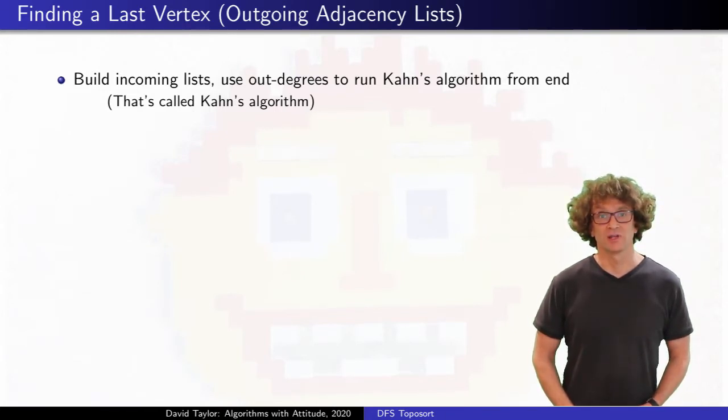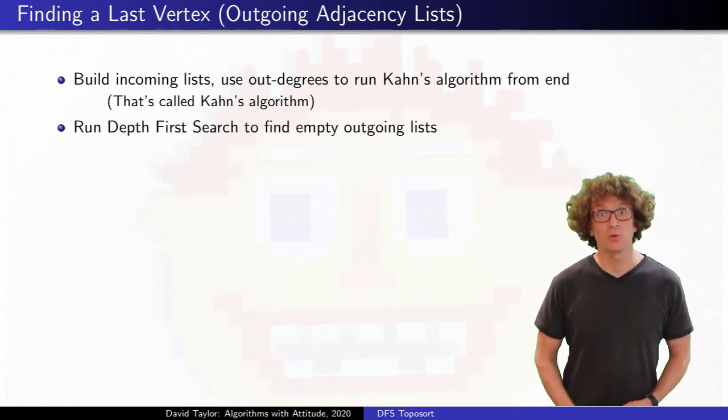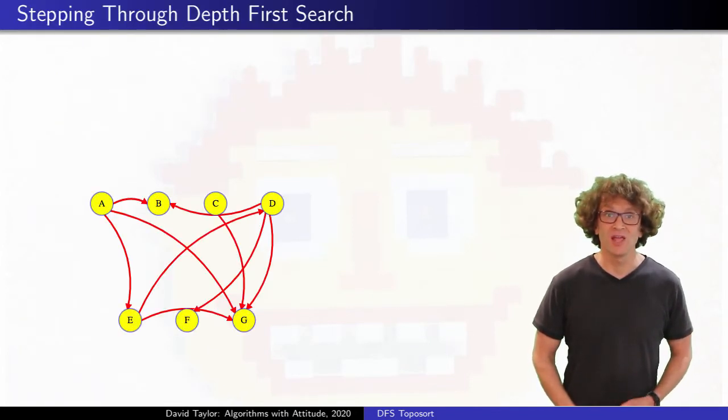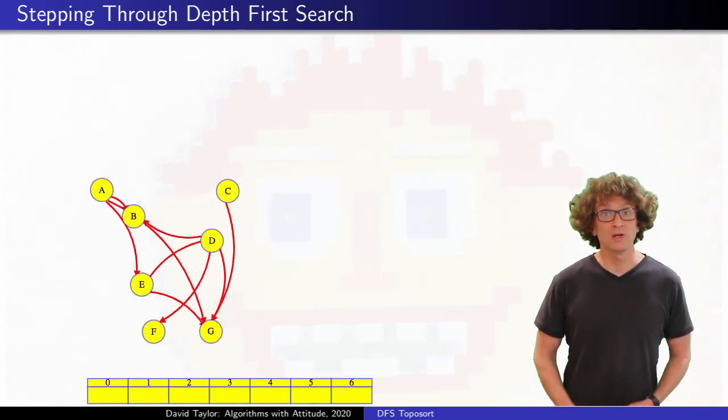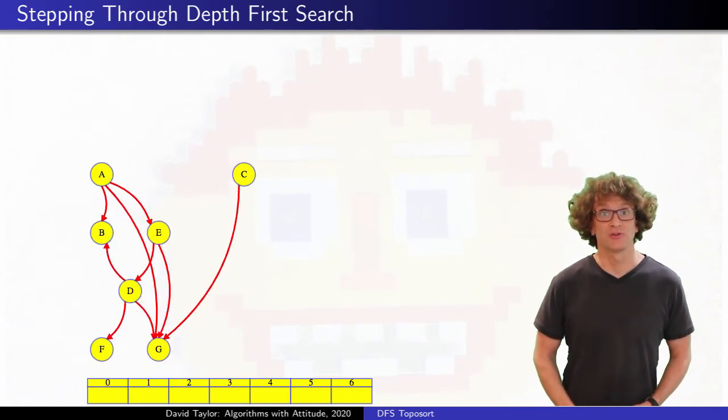Another way to find a vertex that can go last is to just run depth first search on the outgoing lists until we get to a vertex with no outgoing edges. That vertex can go last. This is the same example graph that I used in the previous video, with room at the bottom for an ordering, but I'll rearrange it to make the depth first search tree easier to see.